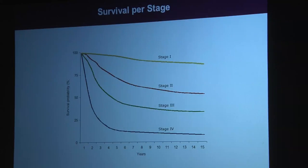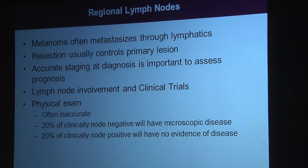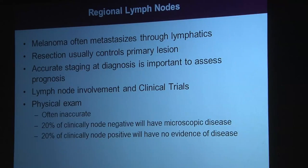To determine if you're stage 3, we check the regional lymph nodes. Melanomas tend to spread through the lymphatics to regional nodes. Physical examination is good — if the melanoma is on your arm, we look at the axilla or neck lymph nodes. But even palpable lymph nodes are negative for melanoma 20% of the time, and 20% of patients with totally normal-feeling lymph nodes actually have melanoma cells in them. So physical examination is not accurate enough for overall staging.